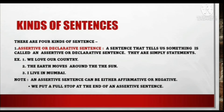Ab hum charcha karte hain kinds of sentences. Waakye ke kitne prakar hote hain? There are four kinds of sentence. Waakye ke mukhyatah char prakar hote hain. First one is assertive or declarative sentence. A sentence that tells us something is called an assertive or declarative sentence.